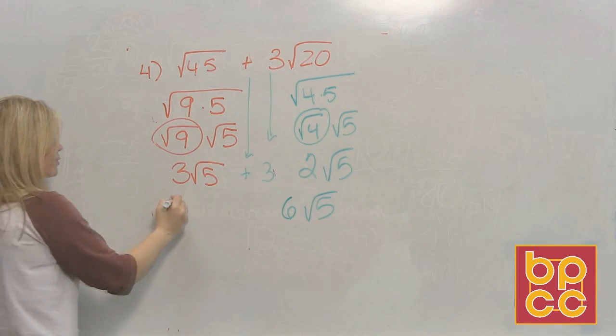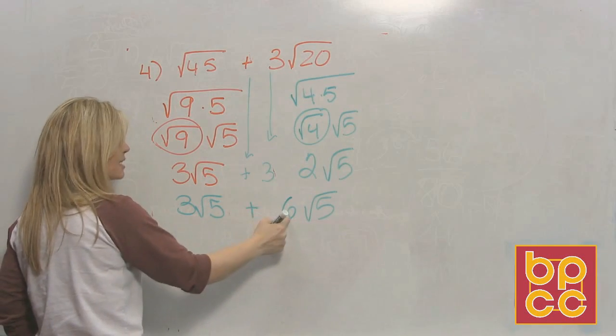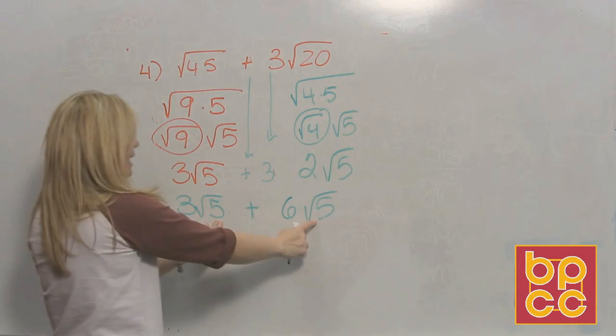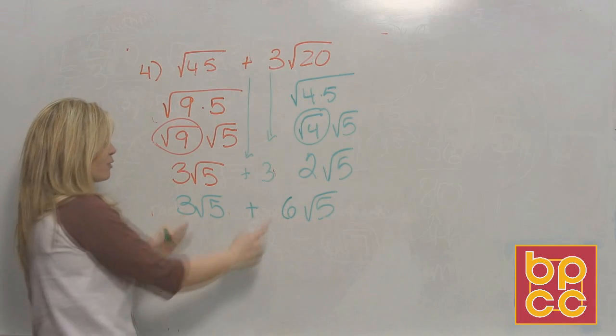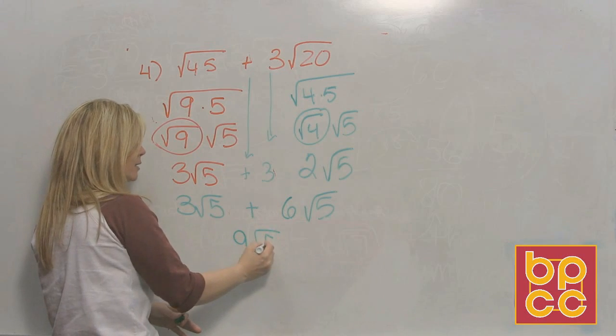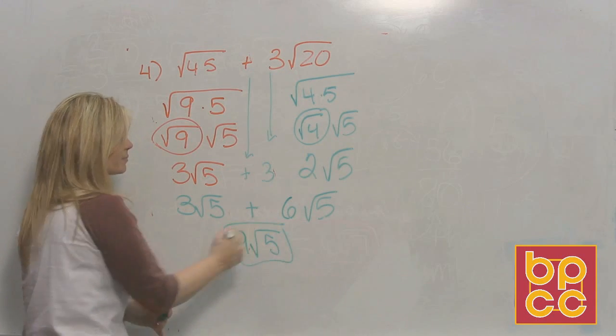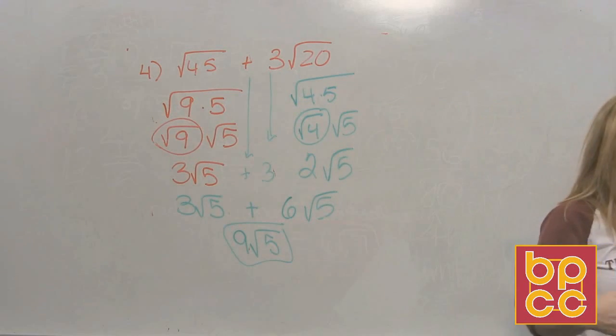So 3 times 2 is 6 square root of 5. Now look. You have like terms. 3 square root of 5 plus 6 square root of 5. Because the radicands are the same, you can add the coefficients. I have 3. You have 6. If we add it, we have 9. 9 what? Square root of 5. So the rules are always the rules. Things have to be alike to add.